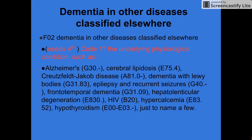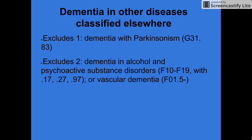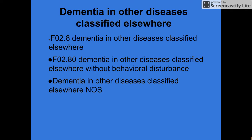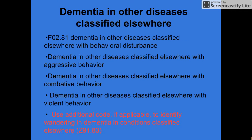Dementia in otherwise classified diseases is F02 and does need a fourth character. You first code the underlying physiological condition such as Alzheimer's, Creutzfeldt-Jakob disease, or dementia with Lewy bodies, then add your fourth character. It excludes dementia with Parkinsonism, and includes dementia in alcohol and psychoactive substance disorders. To identify wandering, use code Z91.83.